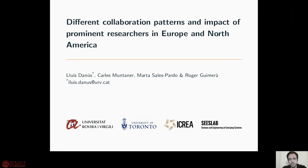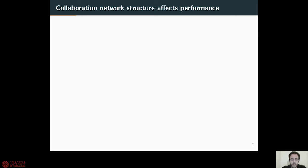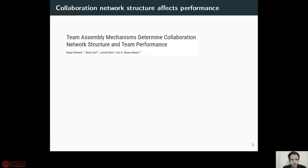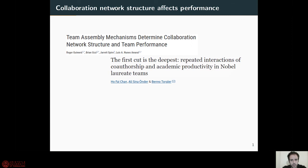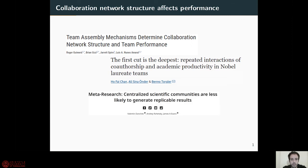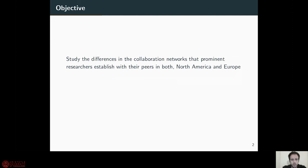I'm Luis Enos, and I'm here to present our recent work entitled 'Different Collaboration Patterns and the Impact of Prominent Researchers in Europe and North America.' Collaboration networks are the networks that scientists establish between them to collaborate in their scientific endeavor. These networks have been widely studied because they affect scientific output — for instance, team performance is affected by network structure, as well as the productivity of the scientific team and even the replicability of results. Despite the importance of these networks, the mechanisms that shape their structure have not been well studied. Different cultural trends or funding schemes may affect the structure of these networks.